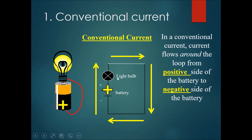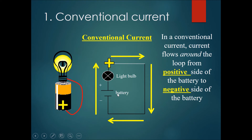We can draw out a simple circuit in diagram form. The long line is annotated by a plus sign and the short line is annotated by the negative sign. That is joined to the light bulb, which is represented by a circle and a cross, and then the wires connect them all back. So the conventional current flows this way — from the big line, the plus sign, current flows up through the light bulb and back, ending at the negative side of the battery.